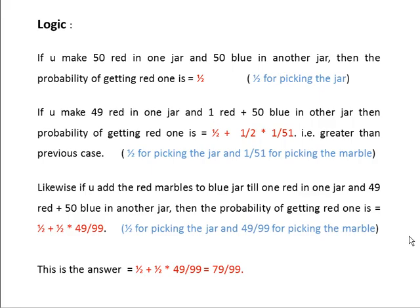Suppose if you divide equally: 50 red marbles in one jar and 50 blue in another jar. Then the probability of getting red one is 1/2. This 1/2 is for picking the jar. When you pick the red jar, you will definitely get a red one. So the probability of getting a red one is 1/2.